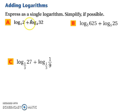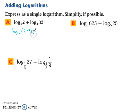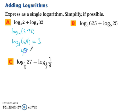Let's practice. We have log base 4 of 2 plus log base 4 of 32. This is the same as log base 4 of 2 times 32, which is log base 4 of 64, which equals 3. You can think of this as: 4 to the what power gives you 64?